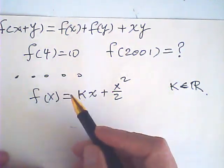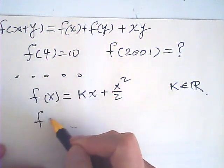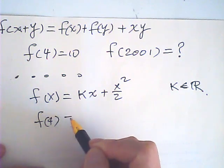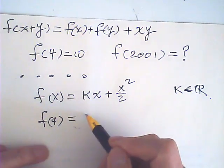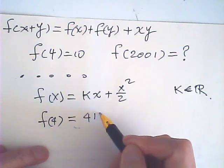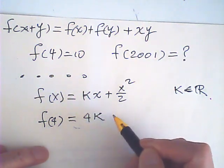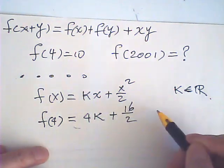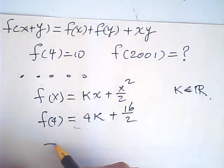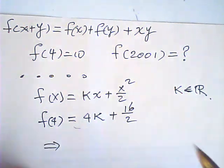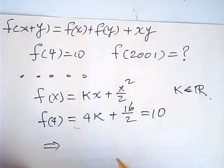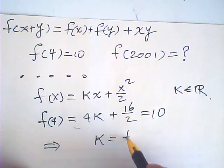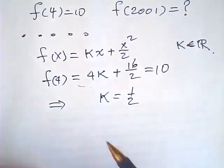So, then, we can use the condition that f of four is equal to 4K plus 16 over 2. So, this means that this is equal to 10. So, K equals half. It's very easy.